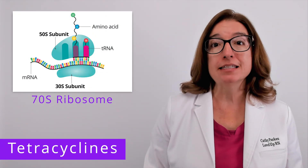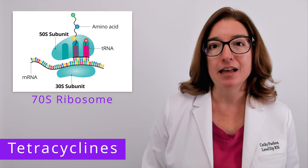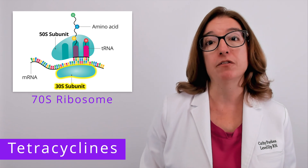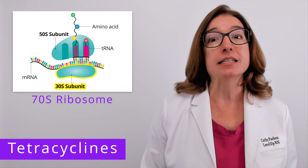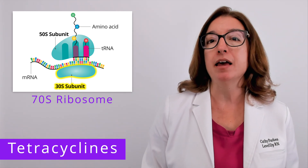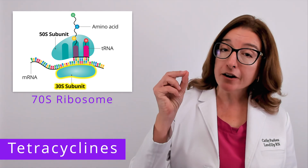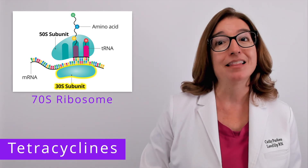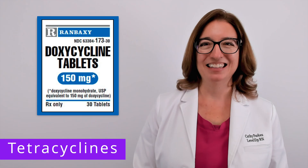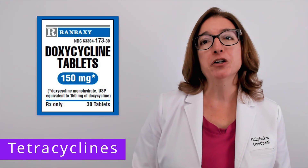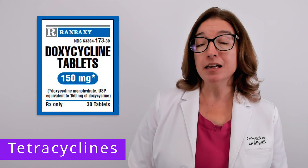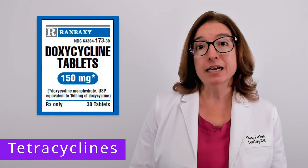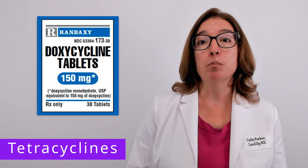Tetracyclines are another drug class that inhibit protein synthesis. Like aminoglycosides, tetracyclines bind to the 30S subunit of the ribosome. However, instead of causing misreading of the mRNA, tetracyclines block tRNA from binding to the ribosome during translation, and this in turn prevents protein synthesis. Tetracyclines are bacteriostatic, meaning they inhibit the growth of the bacteria but don't kill the bacteria. And like aminoglycosides, tetracyclines are broad spectrum.